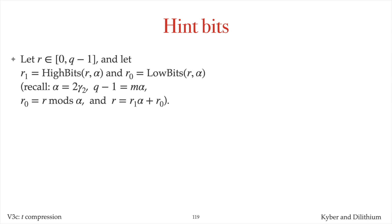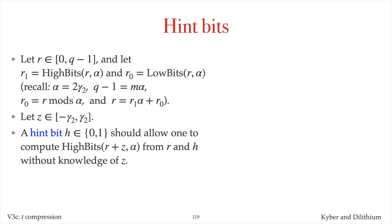Recall the definition of high bits and low bits. Alpha is an even divisor of q minus 1, and m is (q minus 1) over alpha. The alpha low bits r0 of an integer r between 0 and q minus 1 is defined to be r mod-s alpha. And the alpha high bits r1 of r is defined to be (r minus r0) divided by alpha. Recall that r1 times alpha is the closest multiple of alpha to r, with ties broken by choosing the smaller multiple. Now let z be an integer between minus gamma2 and gamma2. A hint bit h should allow one to compute the alpha high bits of r plus z from r and h, without knowledge of z. So the hint bit should tell us whether the carry digit when z is added to r is minus 1, 0, or plus 1.